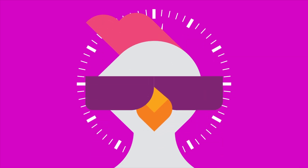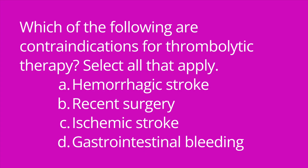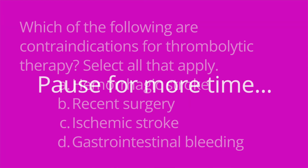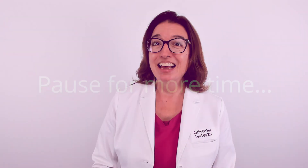It's quiz time! I have three questions for you. Question one: What is the key adverse effect of thrombolytics? The answer is bleeding. Question two: Which of the following are contraindications for thrombolytic therapy? Select all that apply. A, hemorrhagic stroke. B, recent surgery. C, ischemic stroke. D, gastrointestinal bleeding. The answers are A, B, and D. Question three: Per the FDA, tPA should be administered for an ischemic stroke within blank hours of symptom onset. The answer is three.